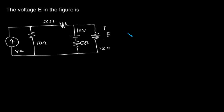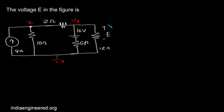We are asked to find out the value of voltage C. We have two nodes V1 and V2. Let the voltages be V1 and V2, and this node we assume has zero potential. To solve this problem, that is to find out voltage E which is nothing but V2, we can use nodal analysis or nodal equations at these two nodes. That means we can write the KCL here and here and solve for two unknowns.